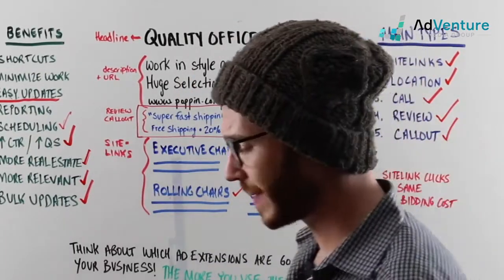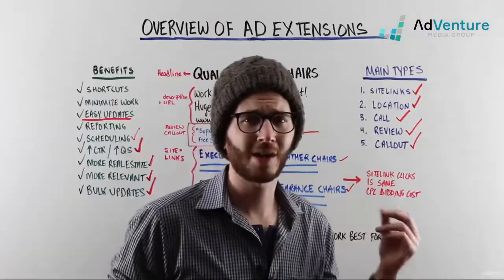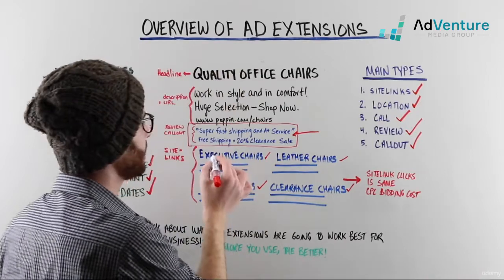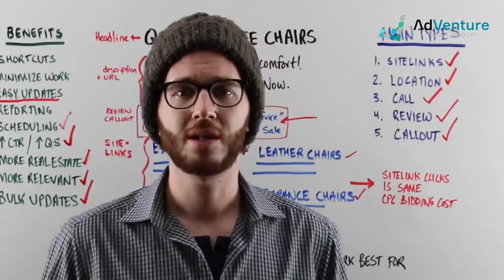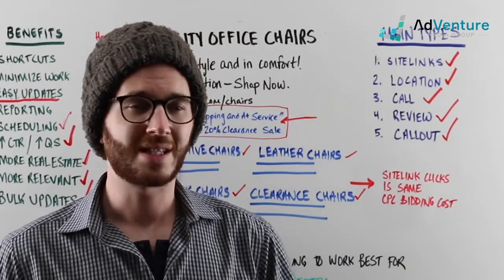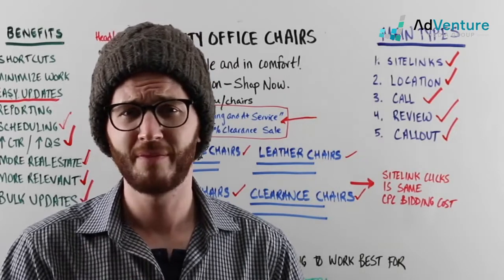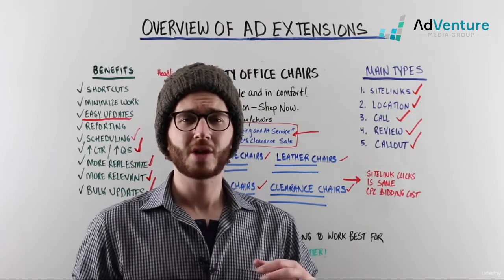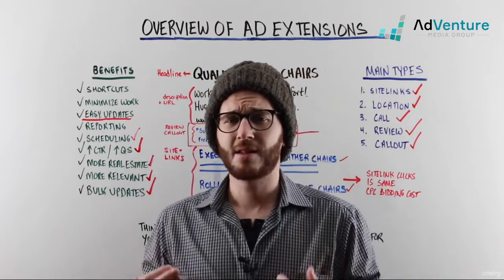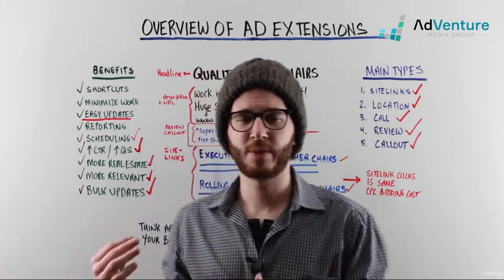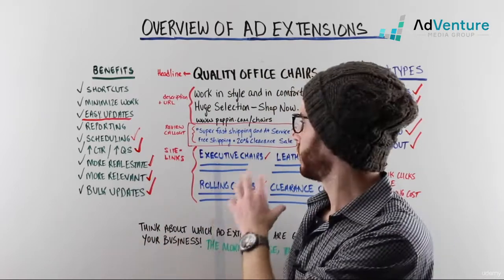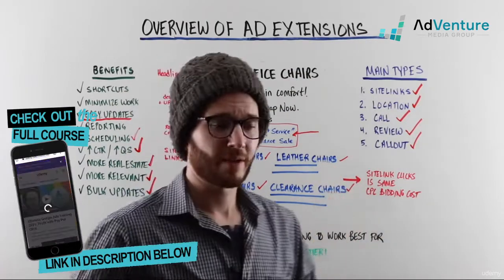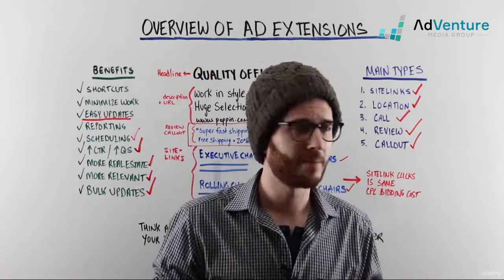Callout extensions are one of the most flexible types. You can create a callout extension at the account level, campaign level, or ad group level. A callout extension — something like 'free shipping' or '20% clearance sale' — allows you to highlight key aspects of your company: a sale, a feature like free shipping, or something about quality like 'made in the USA.' These are broader global assets you want to highlight above and beyond the specific features of the ad itself. Callout extensions are very powerful, and while they're not clickable, they provide that extra push and take up additional real estate on the screen.